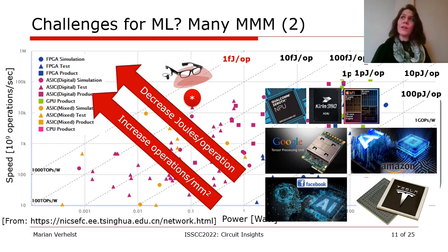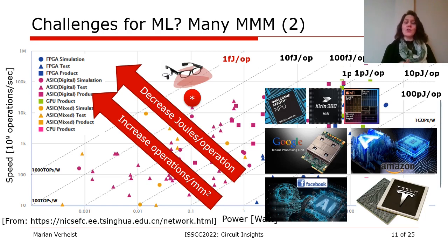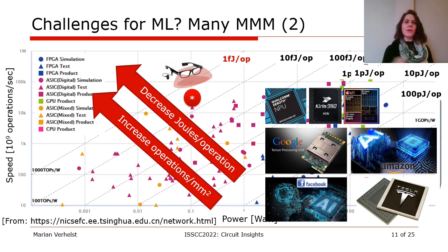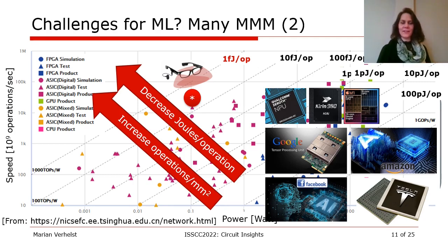What makes all these companies so excited about chip design for machine learning? It's really because they see the need to push energy efficiency and throughput. If they have a chip that can do that better than others, they have a big competitive advantage. So it's all about decreasing joules per operation and increasing the operations per millimeter-squared of chip.